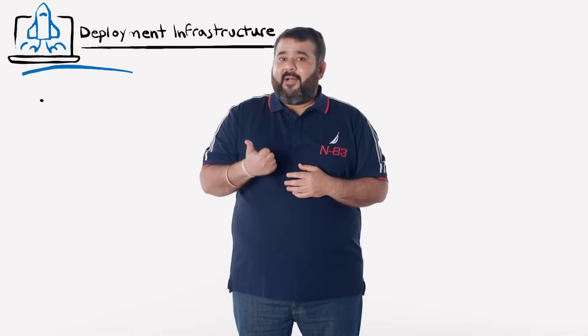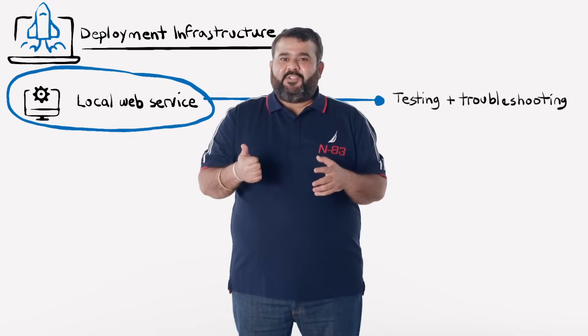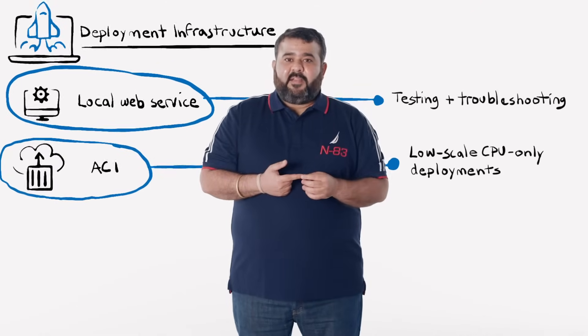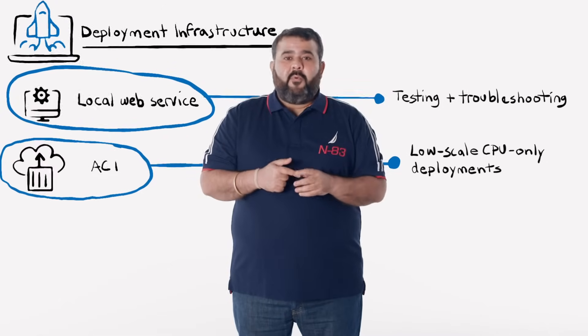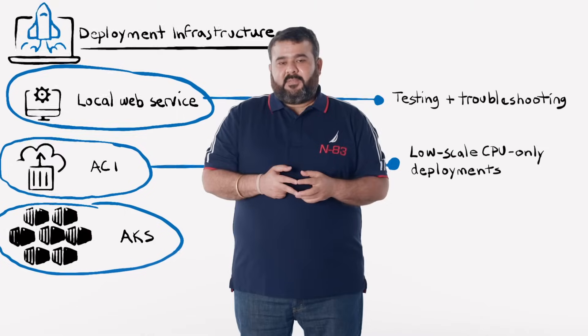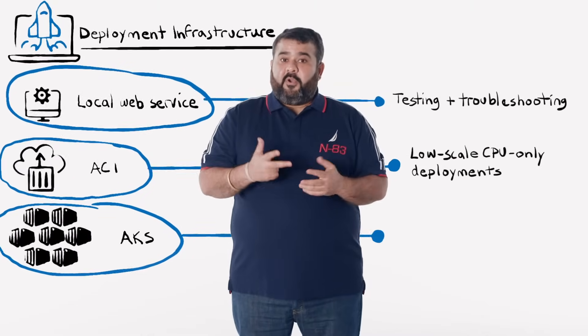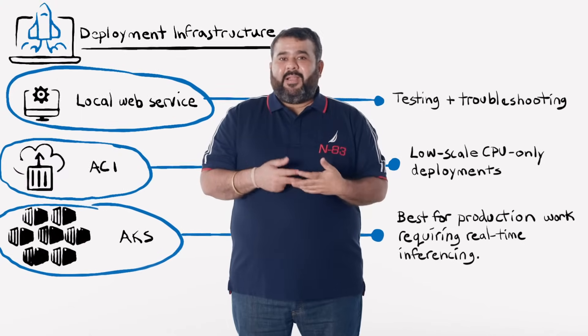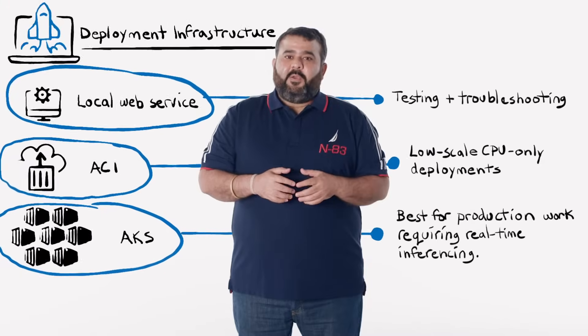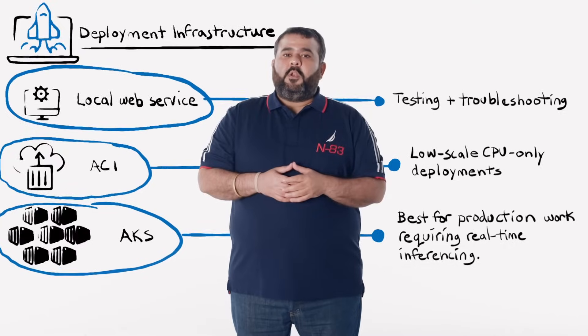Depending on your needs and expertise, you can deploy models using any of these container topologies. The next question is: where do you deploy these containers? That is what we'll discuss as part of deployment infrastructure. Depending on the stage of deployment, you can choose from a variety of options. First, a local web service, mostly used while testing and troubleshooting your deployment packages on local machines. Second, Azure Container Instances, mostly recommended for a dev-test environment to validate containerized deployments before moving them into full-scale production — it is mostly for low-scale, CPU-only deployments. Third, the Azure Kubernetes Service, or AKS, which is the preferred deployment environment for production workloads requiring real-time inferencing. It's a fully managed Kubernetes environment that can scale from tens to thousands of nodes for very high queries-per-second requirements, supporting both CPU and GPU-based deployments.